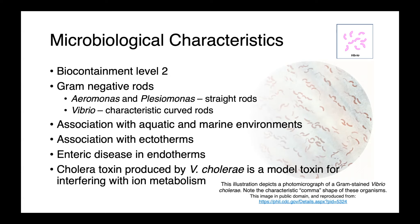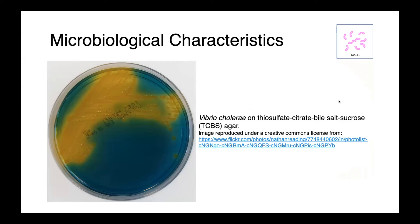One organism within this group, Vibrio cholerae, produces a really important toxin — cholera toxin — that not only causes a very severe disease, but in the laboratory setting it's a really important tool for studying cellular physiology. In this image here, you can see Vibrio cholerae growing on TCBS agar, or thiosulfate citrate bile salts sucrose agar, which is selective and differential.